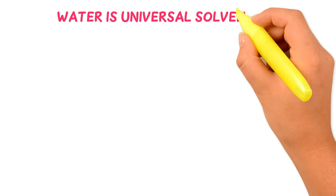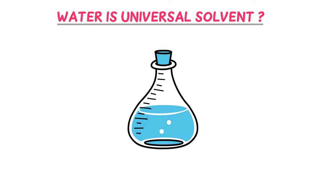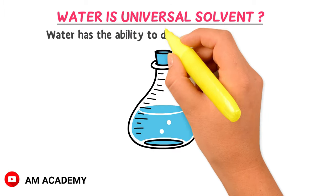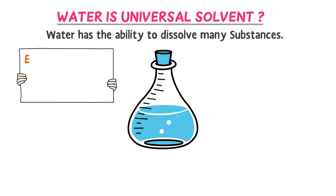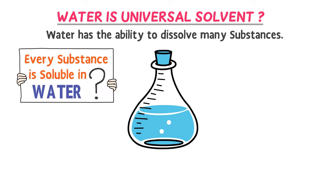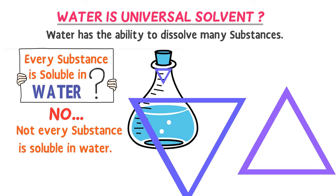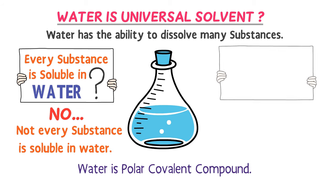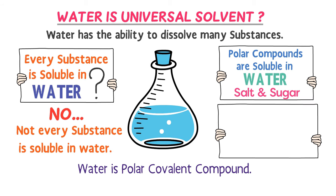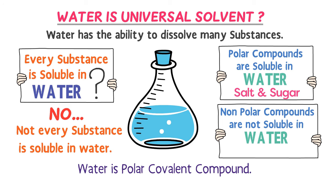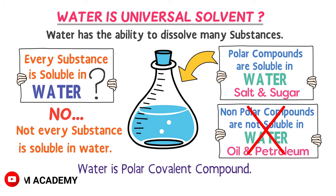Why is water known as a universal solvent? The answer is very simple — it is because water has the ability to dissolve a large number of substances. However, not every substance is soluble in water. Water is a polar compound, and only polar compounds are soluble in water, like salt and sugar. Non-polar compounds are not soluble in water, like oil and petroleum. Remember: only polar compounds are soluble in water; non-polar compounds are not.